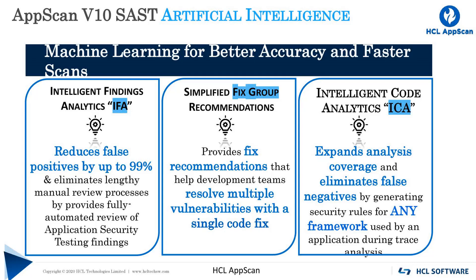For example, in application number one, the deep scan findings identified more than 12,000 potential vulnerabilities. IFA reduced this count to about a thousand and identified 35 places, or fixed groups, in the code to address all 1,000.